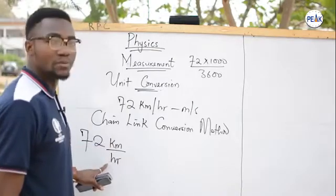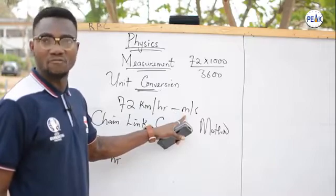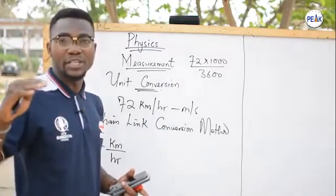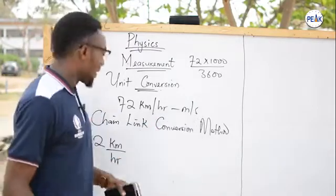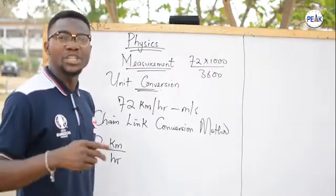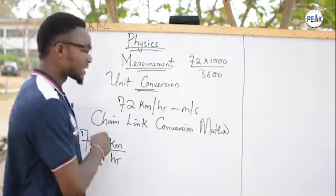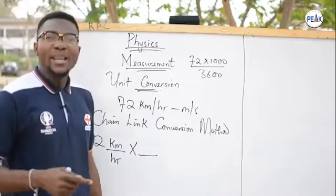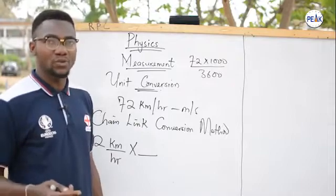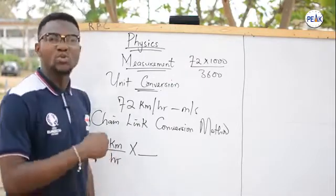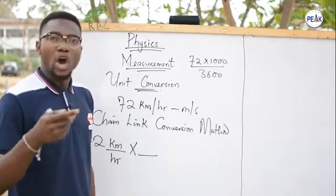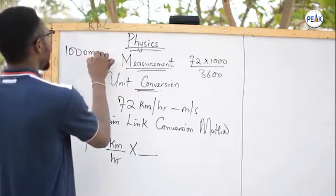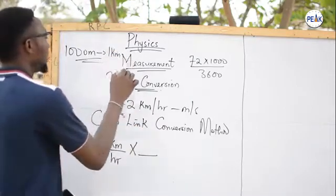Look at this: we have a numerator of kilometers and a denominator of hours. We are going to a numerator of meters and a denominator of seconds. We focus on converting the numerator first, then we convert the denominator to our desired destination unit. In the chain link conversion method, you introduce a chain of multiplication and division. I am coming from kilometers and going to meters — the relationship is: 1000 meters make one kilometer.